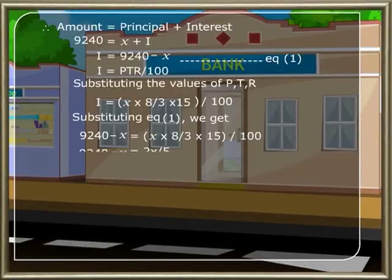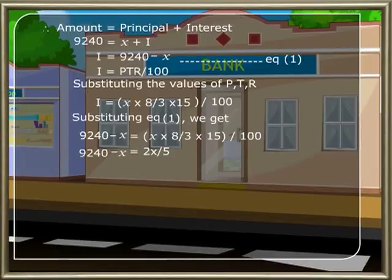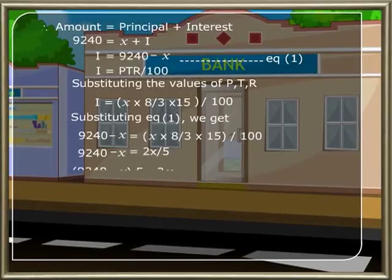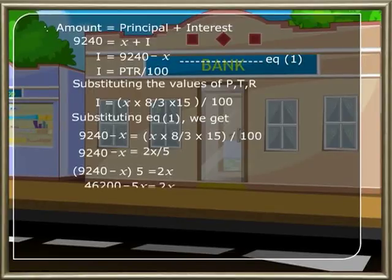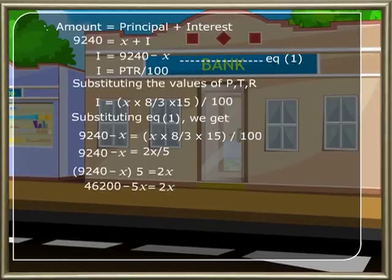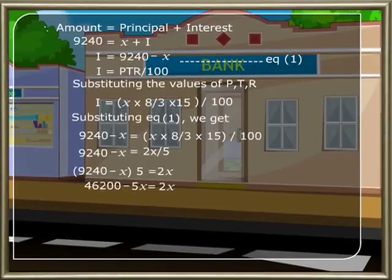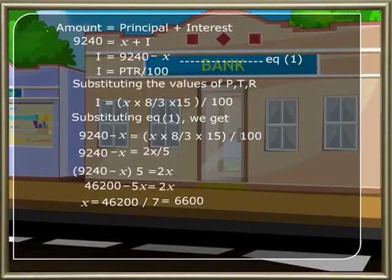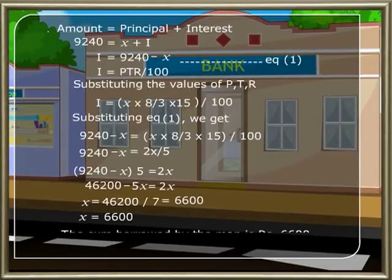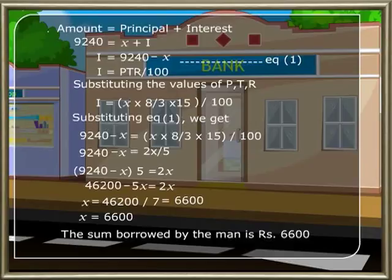Solving further, 9240 minus x equals two x by five. Taking x to the left side: five into (9240 minus x) equals two x, giving 46200 minus five x equals two x. Therefore x equals 46200 by seven, which equals 6600. The sum borrowed by the man is rupees 6600.